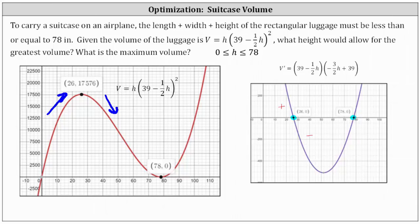Similarly, the graph of the derivative function verifies the derivative changes from negative to positive at h equals 78, which means the volume function changes from decreasing to increasing at h equals 78, giving a relative minimum. Because we want to maximize the volume, a height of 26 inches will maximize the volume. The graph also indicates the maximum volume is 17,576 cubic inches.